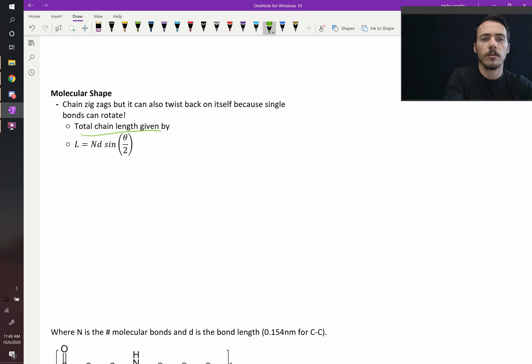What would be my total chain length? Well that's given by this formula here. L equals N times d times sine of theta over two. What is all this? N is the number of molecular bonds along this chain, d is the individual bond length, and then theta is the angle of the bond.